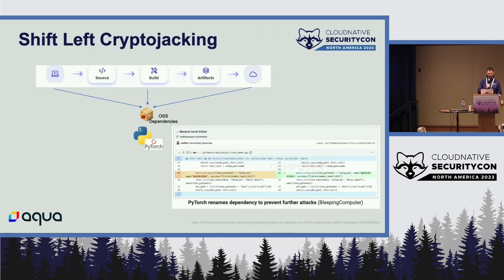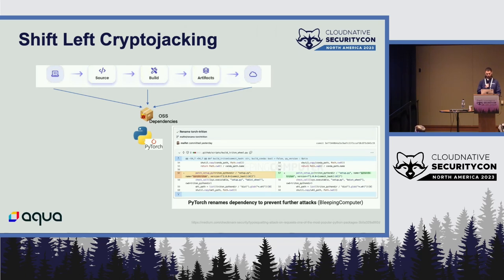Another attack vector is dependency confusion, which happened with PyTorch just a few weeks ago. As part of the PyTorch build process, it loads its own dependencies — some of which were internal. When loading Python dependencies, the resolver first checks the public PyPI index, and only falls back to the internal repository if not found. Because PyTorch did not reserve this specific library name on the public PyPI index, bad actors pushed a malicious package with that name to public PyPI, and PyTorch pulled it as part of its build — completely compromising that version.